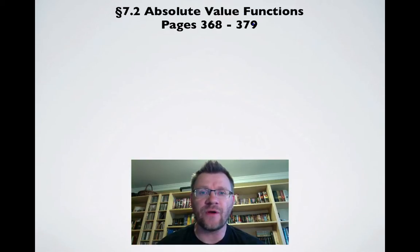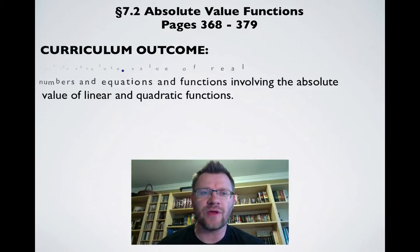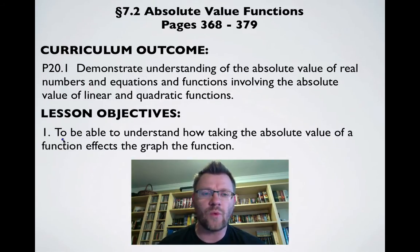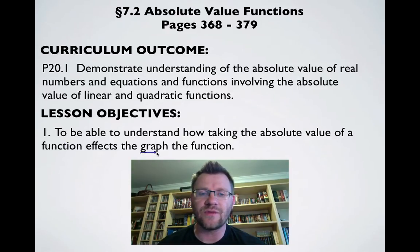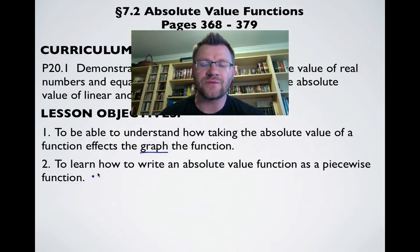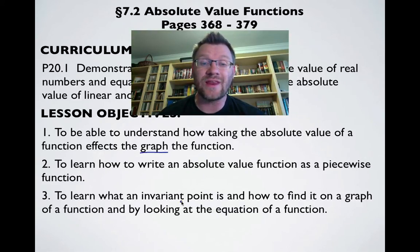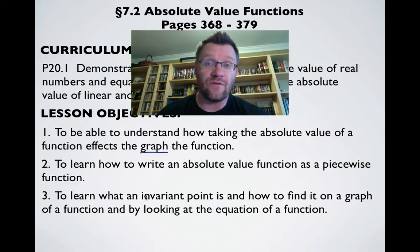We're on 7.2 today, which is Absolute Value of Functions, on pages 368 to 379 in your text. Our curriculum outcome is to demonstrate understanding of the absolute value of real numbers and equations and functions involving the absolute value of linear and quadratic functions. Our lesson objectives are: one, to understand how taking the absolute value of a function affects the graph of the function; two, to learn how to write an absolute value function as a piecewise function; and three, to learn what an invariant point is and how to find it on a graph and by looking at the equation.